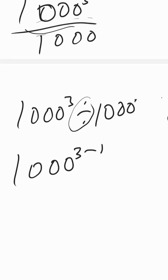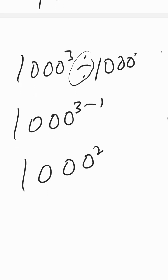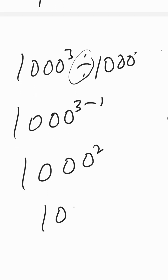So this was 1000, so three minus one becomes what? Two. 1000 to the second power. 1000 to the second power, this is the answer. Thank you, and don't forget to subscribe.